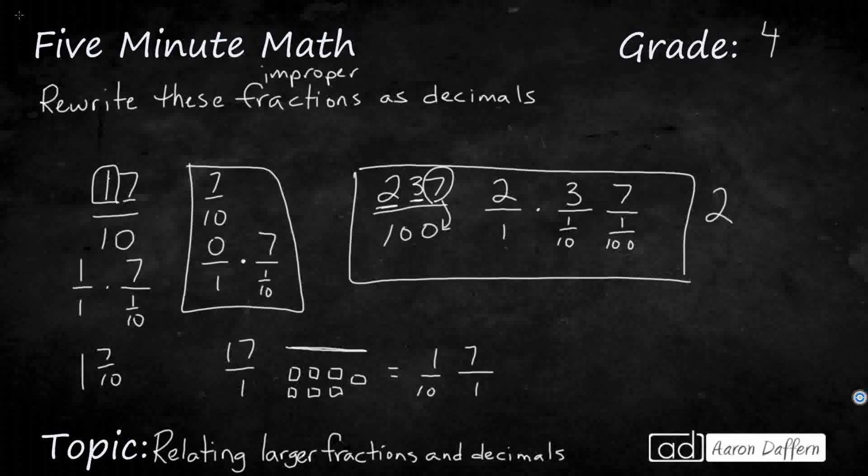Or you could write it as a mixed number, 2 and 37 hundredths, which looks probably a little bit neater. This right here is the same thing as this right here. This is a mixed number, whereas what we originally saw it as was an improper fraction.